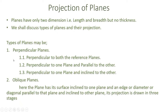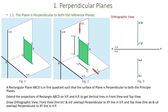The first case: a plane perpendicular to both reference planes, that is HP and VP. Here we have placed a rectangular plane ABCD which is perpendicular to both reference planes. Side AD and side BC are perpendicular to the horizontal plane, whereas side AB and side DC are perpendicular to the vertical plane. When extended, points A and B project onto a single point A-dash B-dash on the vertical plane.